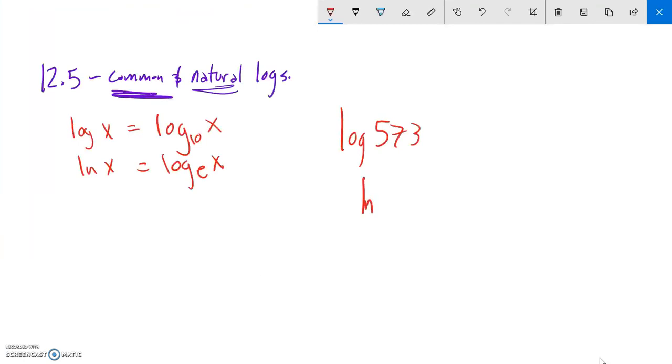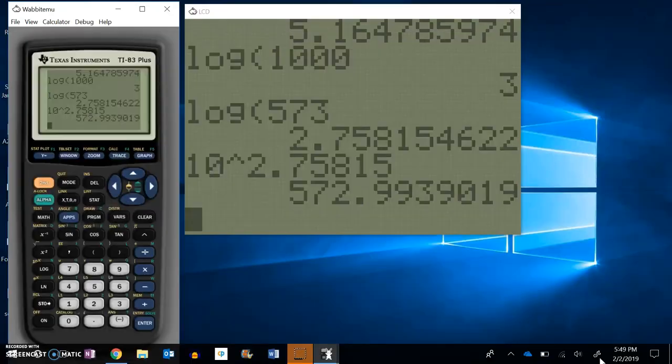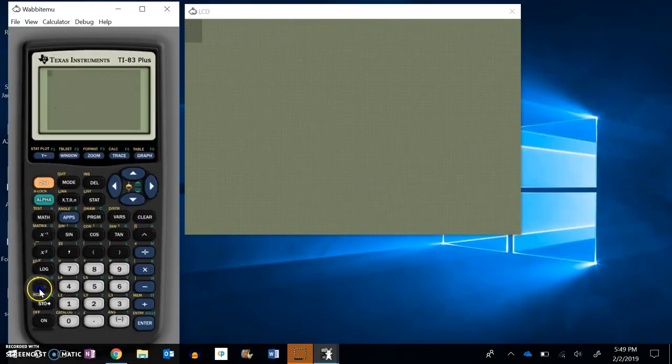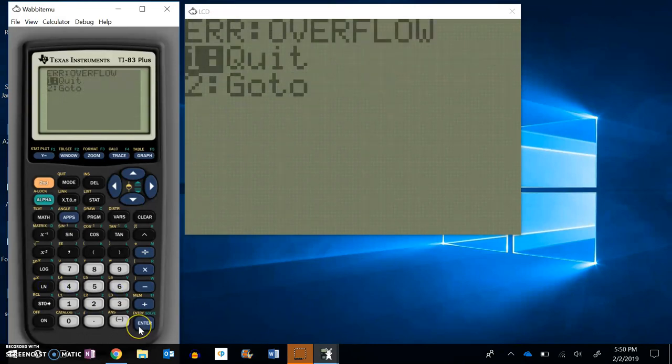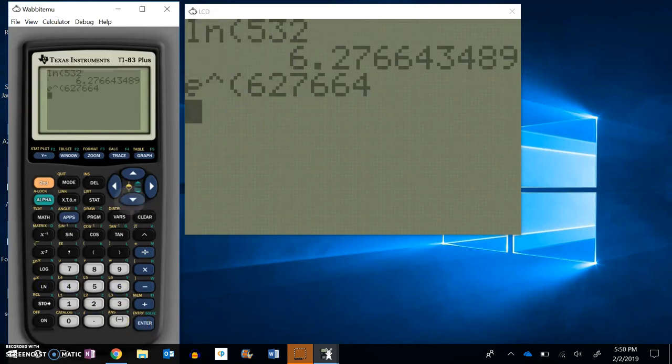Same thing with natural log if I wanted to go natural log of 532. Natural log of 532, so about 6.2 to 7. That means if I go e to that power, I should get...